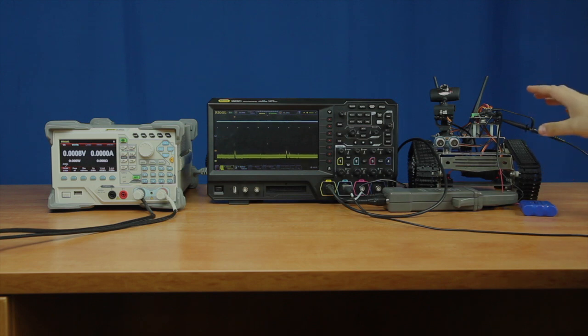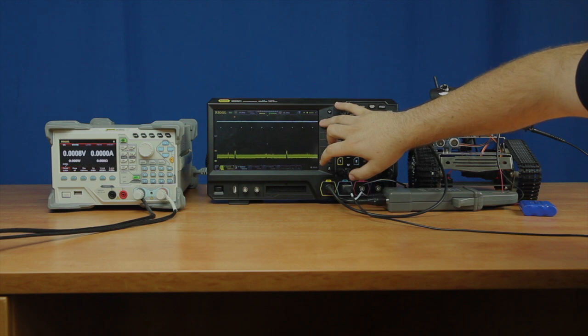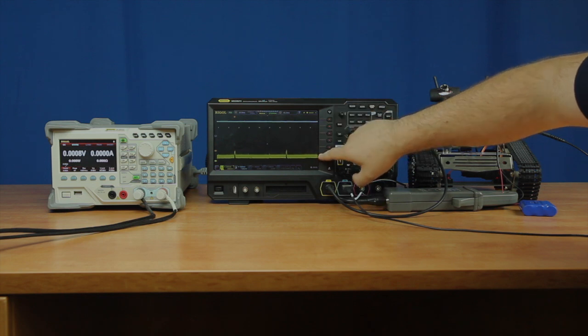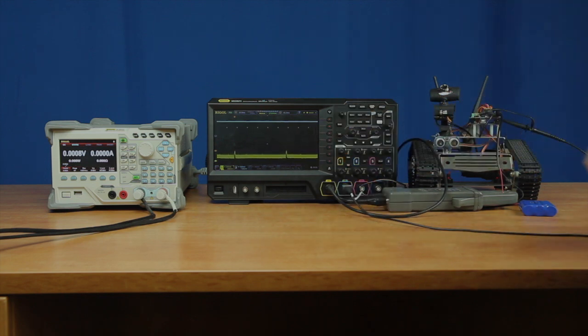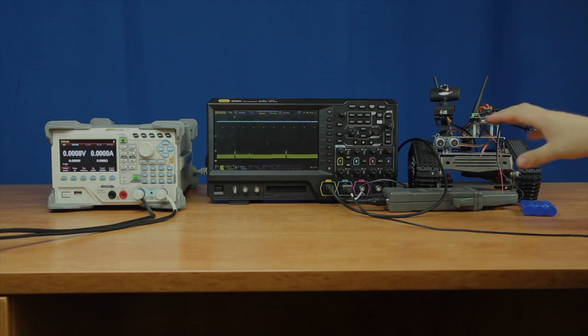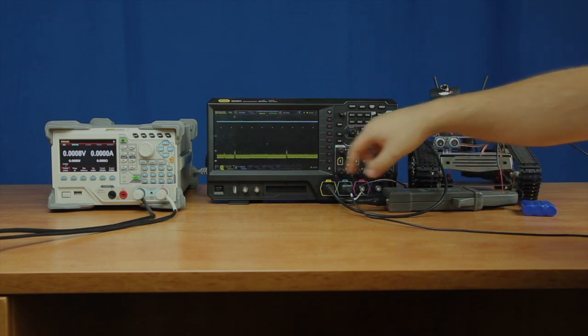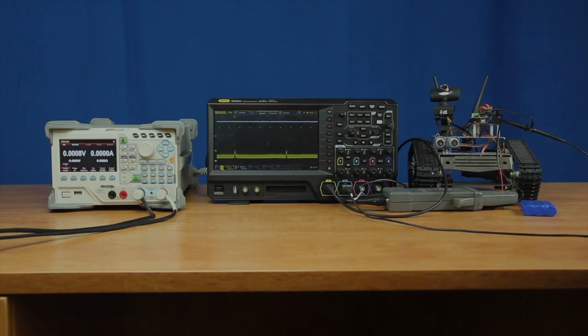So what we're going to do here is, just like before, we've got in blue our voltage up at the top, and then our yellow is our current draw. And what we're going to try and do is we're going to take some measurements from our current probe on our current line to then recreate the same draw with our electronic load.